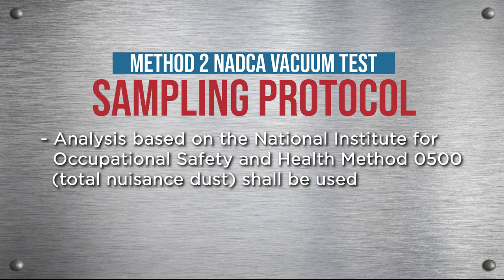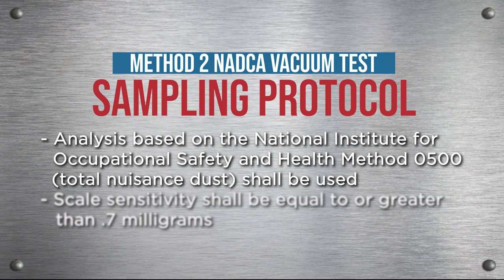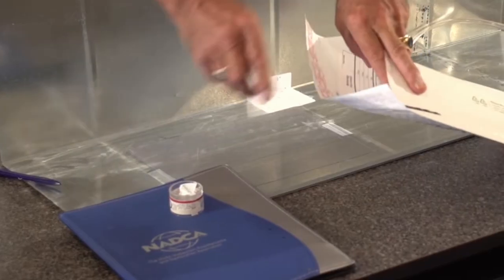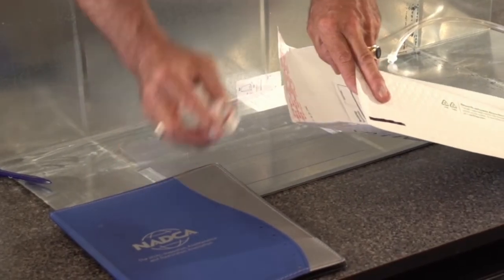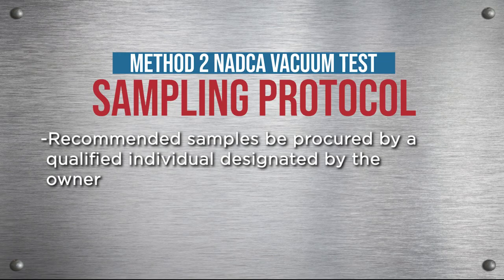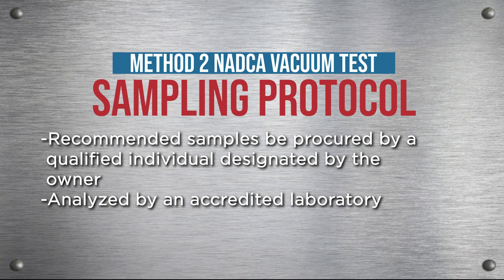Analysis based on the National Institute for Occupational Safety and Health Method 0500, total nuisance dust, shall be used. Scale sensitivity shall be equal to or greater than 0.7 milligrams and shall be calibrated in accordance with the manufacturer's written recommendations. Generally, samples are sent to a laboratory for testing. However, sampling equipment is capable of being brought onto the worksite. It is recommended that samples be procured by a qualified individual designated by the owner and analyzed by an accredited laboratory.